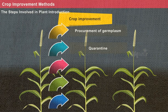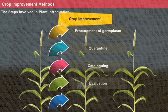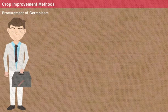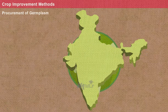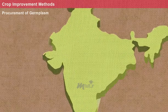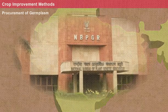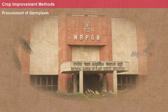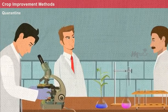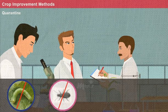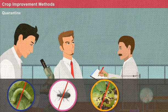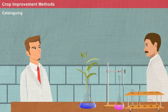The steps involved in plant introduction are: procurement of germplasm, quarantine, cataloging, evaluation, multiplication, and distribution. In the first step, procurement of germplasm, a person who introduces genetic material to other countries must obtain permission from the introduction agency NBPGR. In the second step, quarantine, a new plant material is observed for infection of insects, pests, diseases, and weeds in an isolated condition.